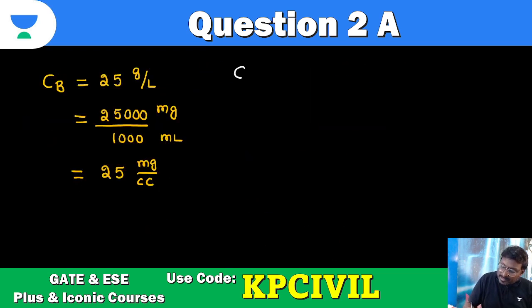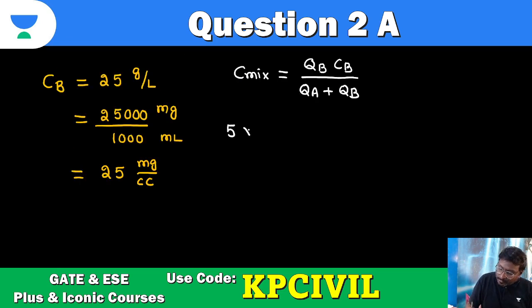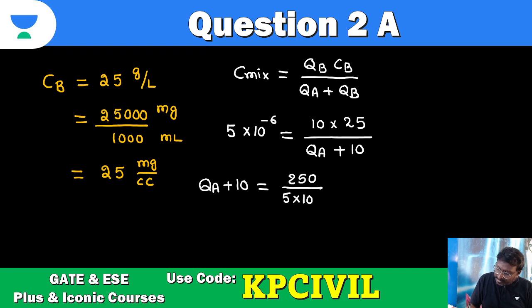What is our formula? C mix equals Qb Cb upon Qa plus Qb. C mix is 5 into 10 raised to minus 6 equals Qb is 10, 10 into 25 Cb, upon Qa we need to estimate plus 10. Qa we need to estimate plus 10. So take it as Qa plus 10 equals 250 upon 5 into 10 power minus 6.